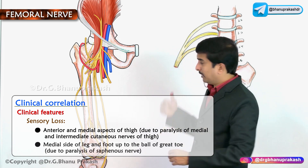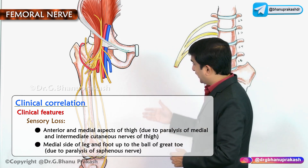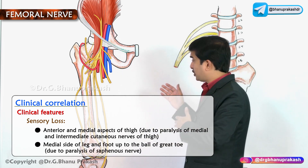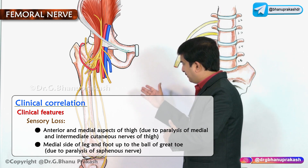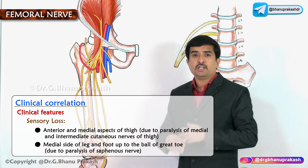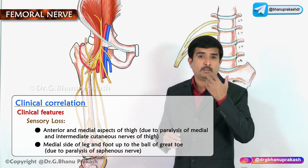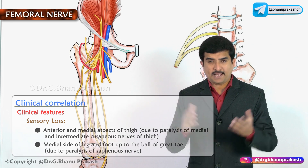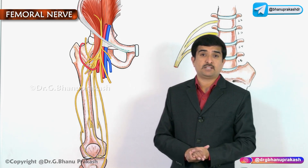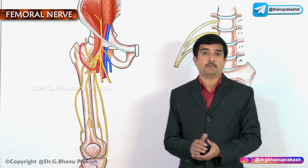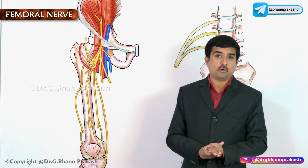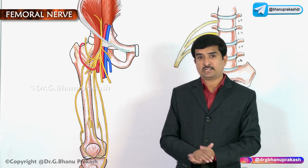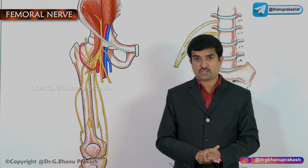Sensory loss on the medial side of the leg and foot up to the ball of the great toe is mainly due to injury to the saphenous nerve. This completes our detailed discussion of femoral nerve anatomy, its innervation, and clinical applications.